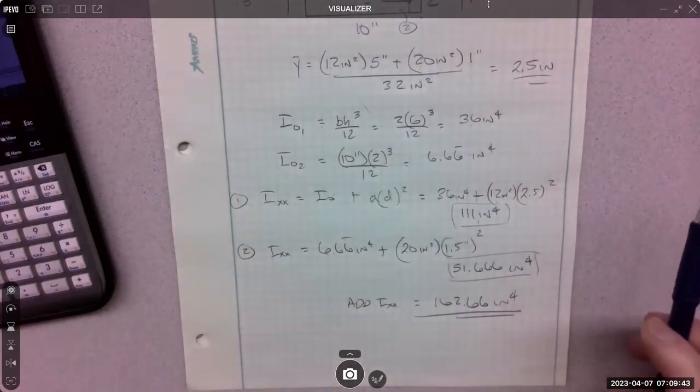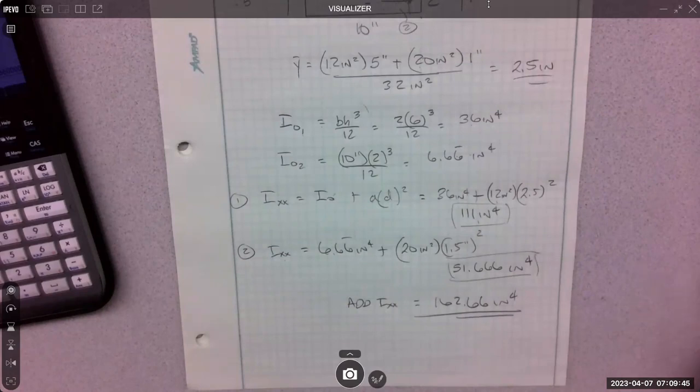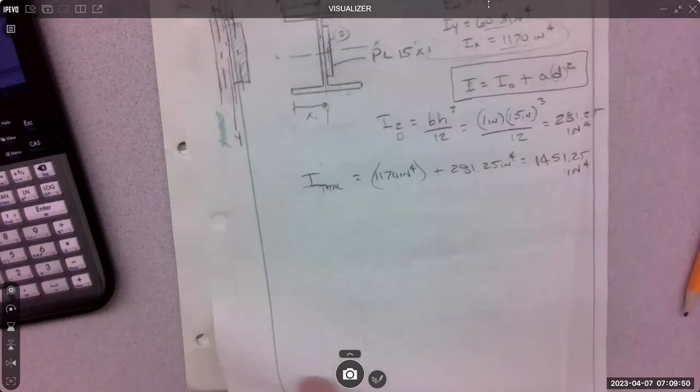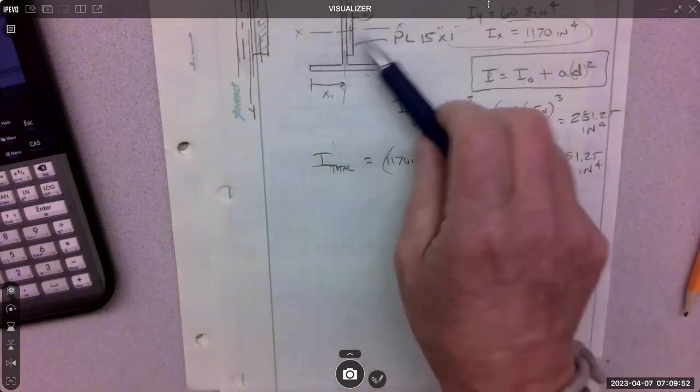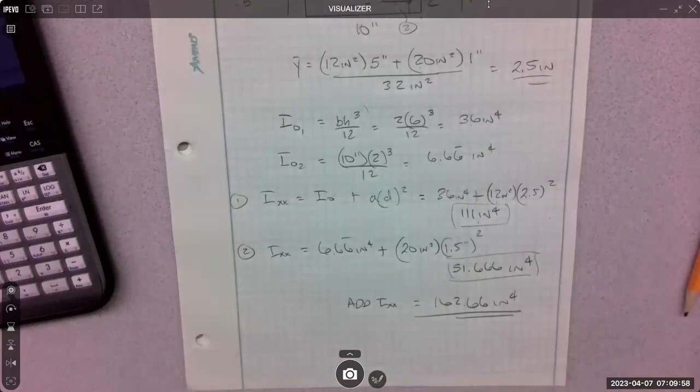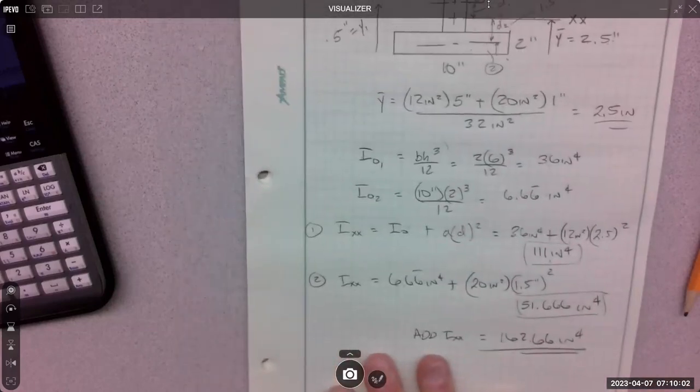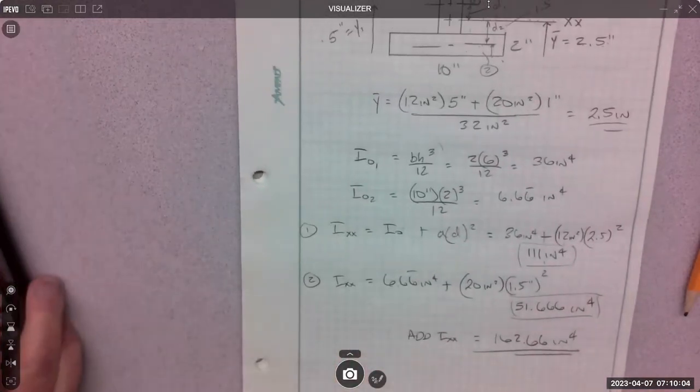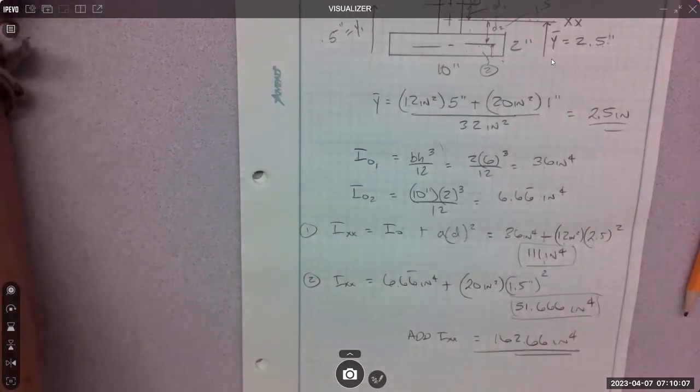So pretty easy on shapes like this where you can just pop these areas and distances out. It gets much more complicated when you have something like this and it's really small, and you have to figure out all these tiny distances. So you just have to be very careful with it. I hope that helps and gets you through the homework set for Friday. Have a great weekend.